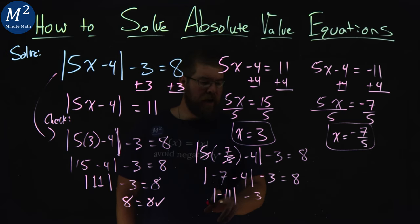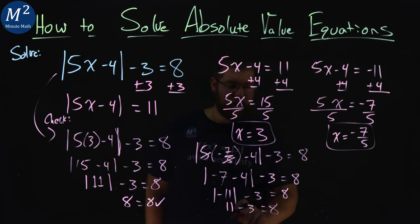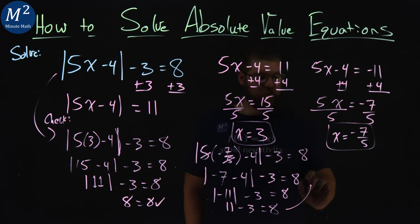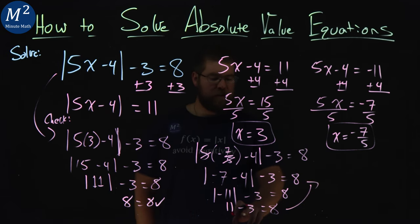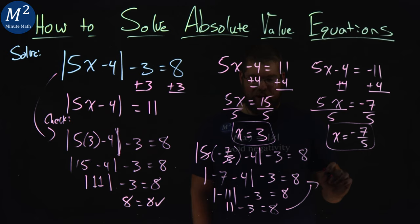And then absolute value equals 8. The absolute value of negative 11 is a positive 11. So positive 11 minus 3 equals 8. And I'm not sure if this will be on the camera if I go lower, so I'll put it up here. 11 minus 3 is 8. So 8 equals 8. We're good.